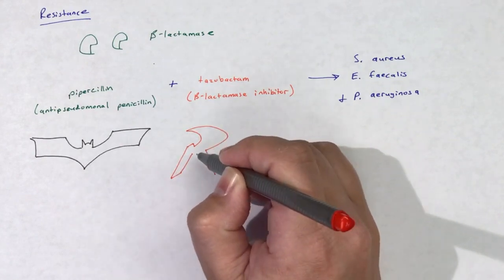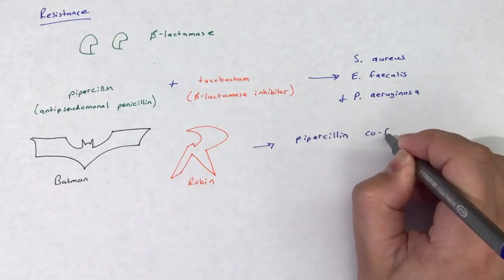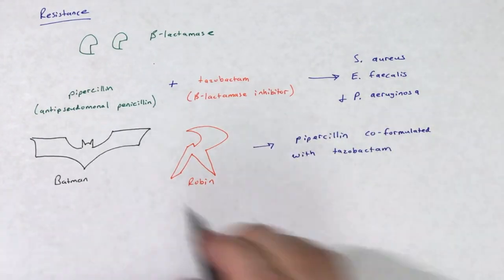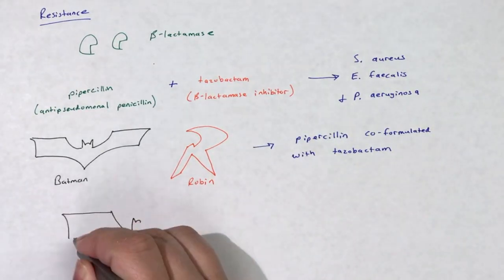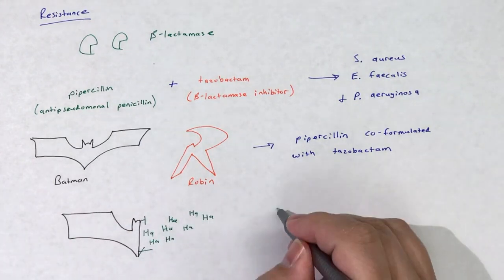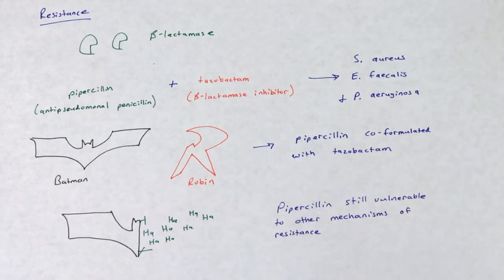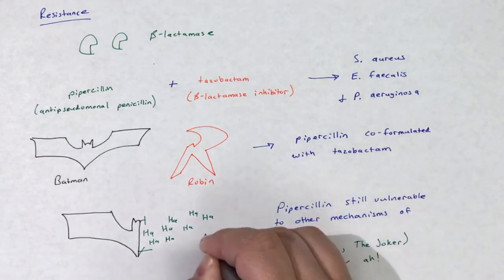It is important to note that piperacillin is always co-formulated with the beta-lactamase inhibitor tazobactam. In addition to degradation by beta-lactamase, anti-pseudomonal penicillins are also subject to other common mechanisms of resistance that they share with all penicillins. For review on these mechanisms, please review the video on penicillins.